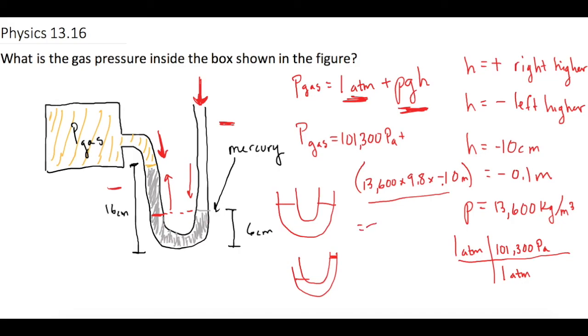When we plug all this in, it gives us 87,972 pascals, or 8.8 times 10 to the 4 pascals is the pressure of the gas.